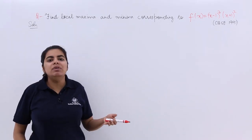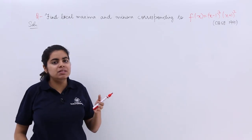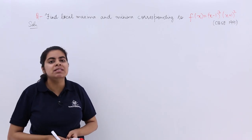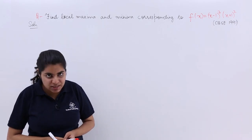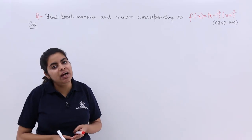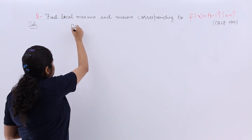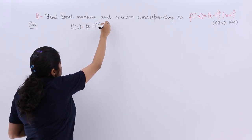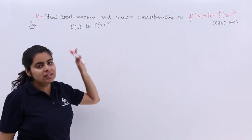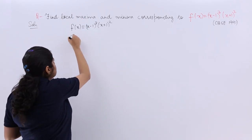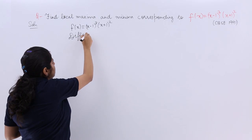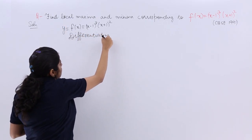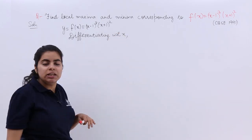Very easily — you know the steps. The first step is to put y equal to f(x). f(x) is already given, so that's easy. The next step is to find dy/dx or f'(x). My f(x) is (x-1)³ multiplied by (x+1)². Now I have to differentiate it with respect to x.